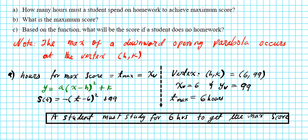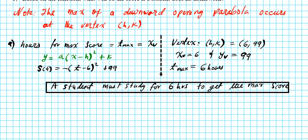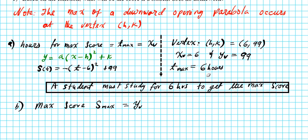Now let's take a look at part B. Part B asks for what the maximum score is. The maximum score — let's call it s-max — is basically the y-coordinate of the vertex. From the results of problem 1A, the y-coordinate of the vertex is 99, so the maximum score is 99. That's the maximum score you can earn if you study for 6 hours using the given function.